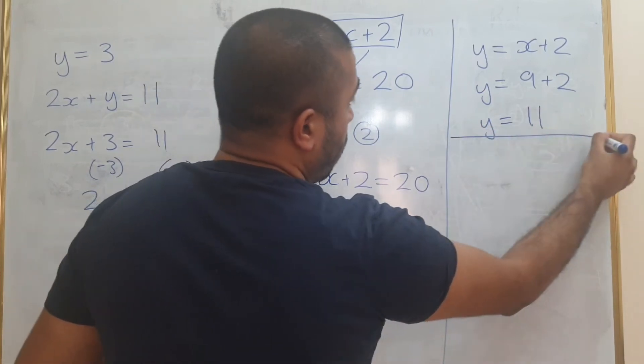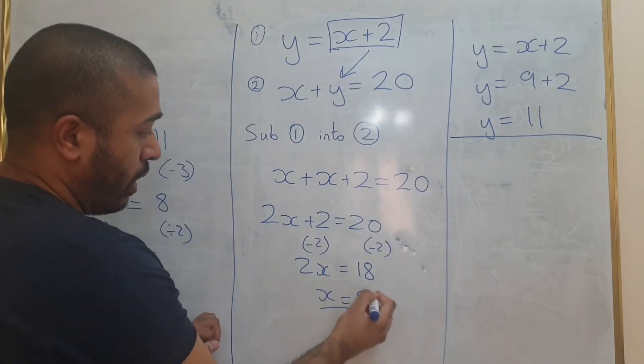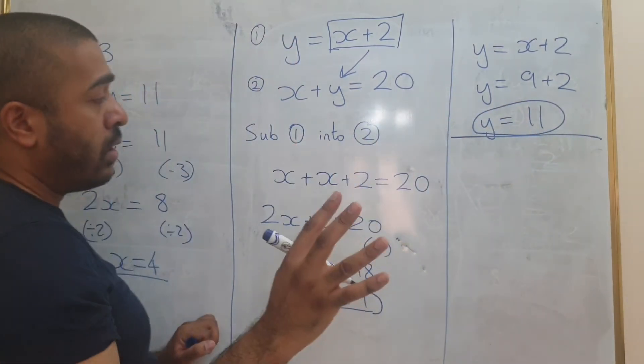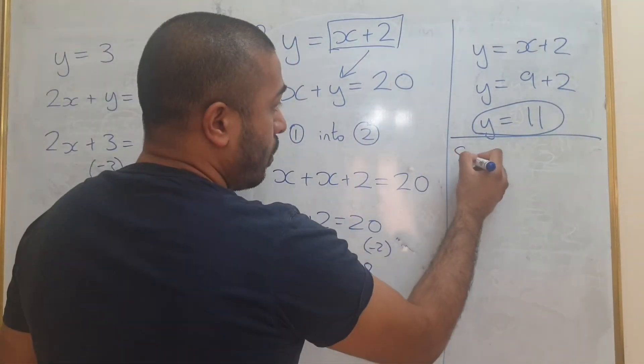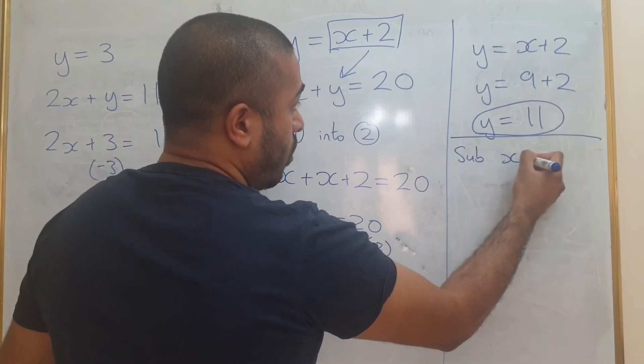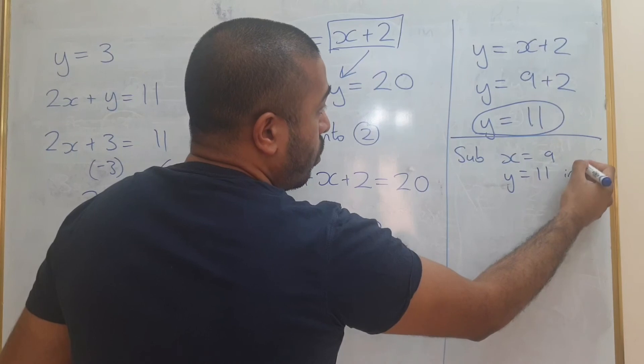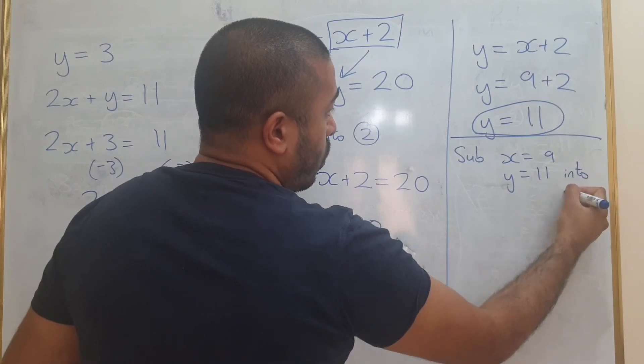So if y is 11, I've now got an answer for x. I've also got an answer for y. The final thing that you need to do is sub x equals 9, y equals 11 into 2.